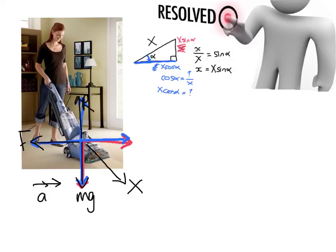We need to know the angle that the hoover is making with the ground, so let's call that alpha. If we draw that angle on here, that would be alpha, and using GCSE geometry this angle must also be alpha. So our adjacent side — here it is, next to angle alpha — means this side is x cos alpha.